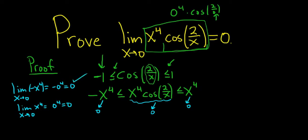So the limit on the left is equal to 0, check. The limit on the right is equal to 0, check. So the one that's trapped in the middle must also approach 0 by the squeeze theorem.